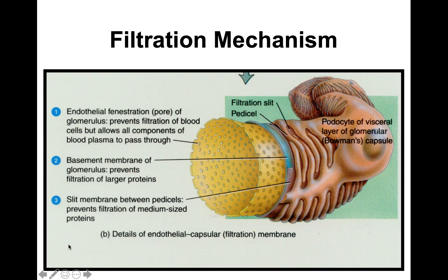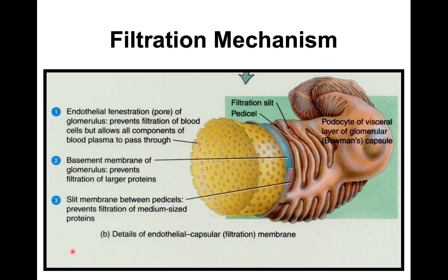Looking closely at the glomerulus, the inner wall has simple squamous epithelium with fenestrations — this is the membrane of the capillary bed and all those holes are fenestrations. Important term to remember: fenestration. On top of this membrane, you have what's called a basement membrane.